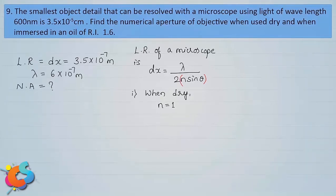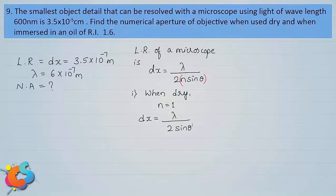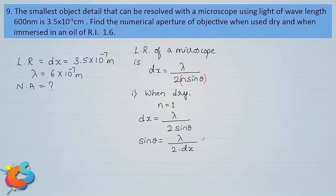In this expression, DX is the limit of resolution, λ is the wavelength of light, and n is the refractive index of the medium between object and objective. Since n = 1 here, the expression simplifies to DX = λ / (2·sinθ). From this I can calculate sinθ, which gives the numerical aperture for the dry case: sinθ = λ / (2·DX).